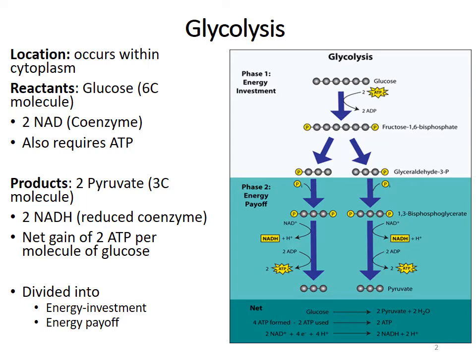The first reaction in cellular respiration is called glycolysis. This happens within the cytoplasm of the cell — basically the liquid portion of the cell — so it happens generally inside the cell with enzymes but not in a particular organelle. We're going to focus on glucose, which is a six-carbon molecule, as a reactant. Also NAD, which is the coenzyme, and this requires ATP to work as well.